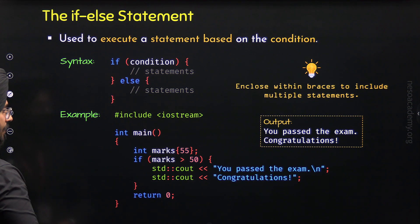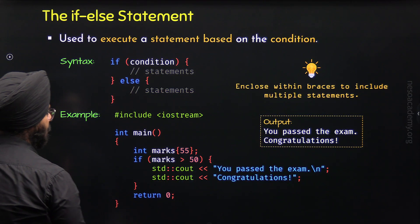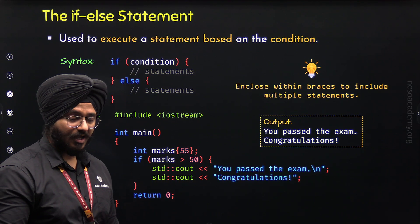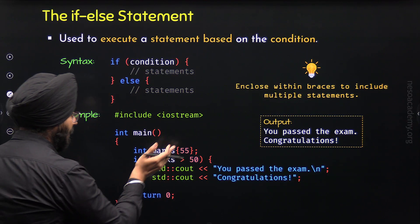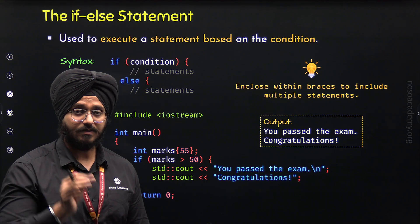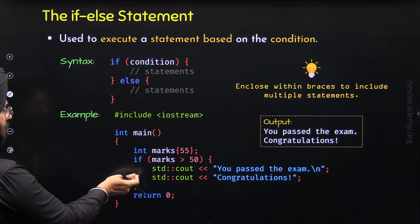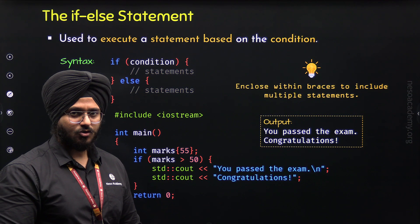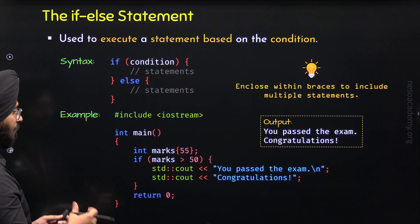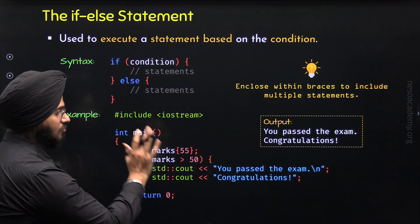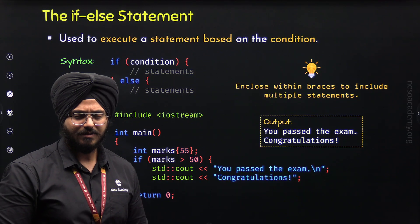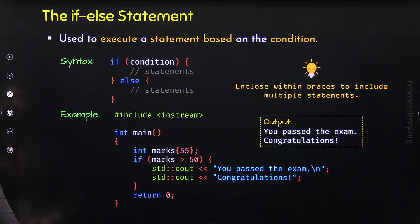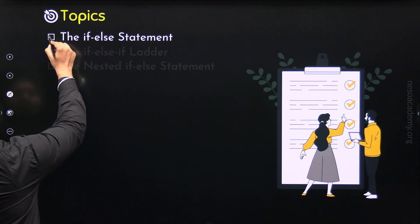I would also like to mention that the ELSE part is actually optional. If we want, we can remove it — we will still get the same output because the marks variable is holding value 55, and only the IF block will execute. But if the value of the marks variable is less than or equal to 50, then we will not get any output on the screen because there is no ELSE block and there is no statement following the IF. So, if we include ELSE, we would be able to execute some statements when the condition turns out to be false. If ELSE is not included, there will be no statements to execute when the condition is false. With this, we have understood the IF ELSE statement properly and are done with the first topic.